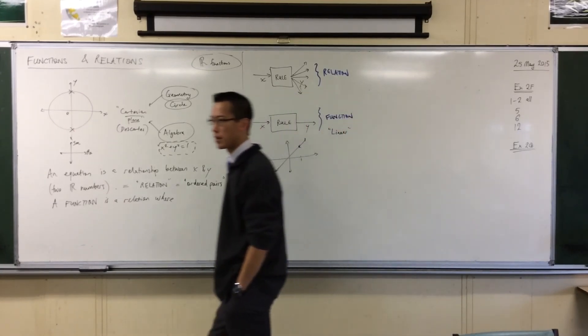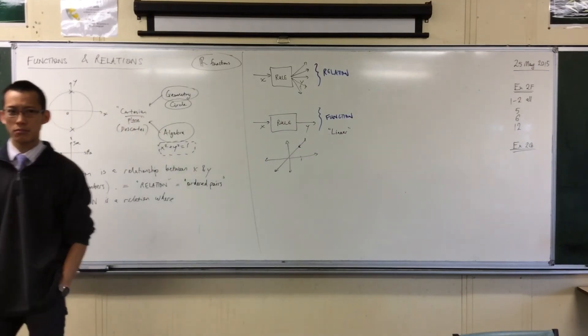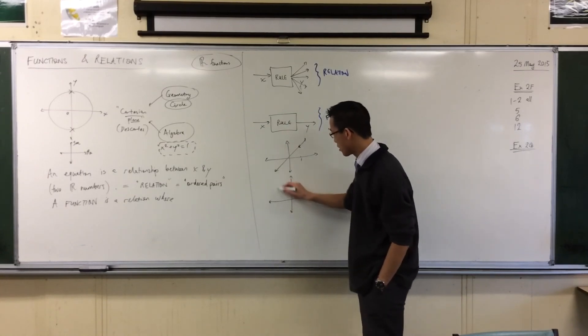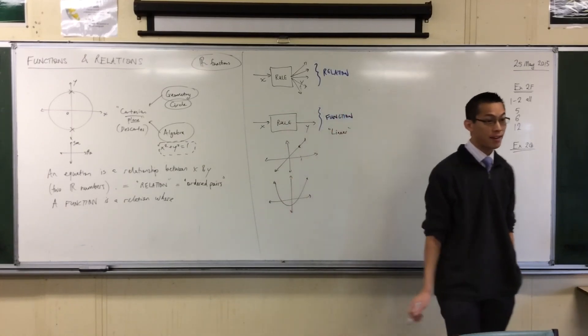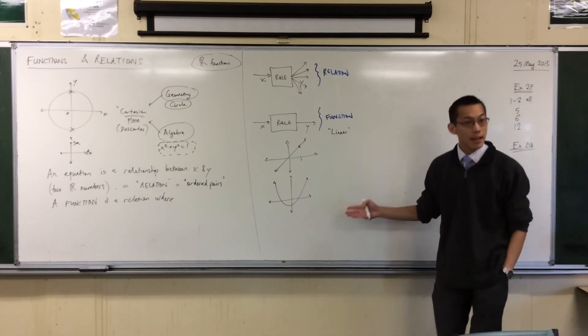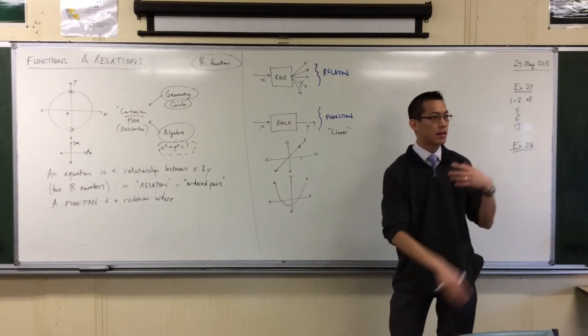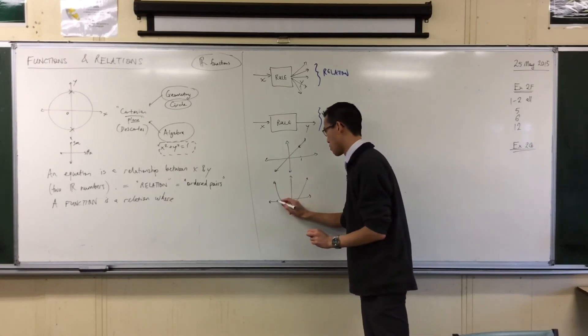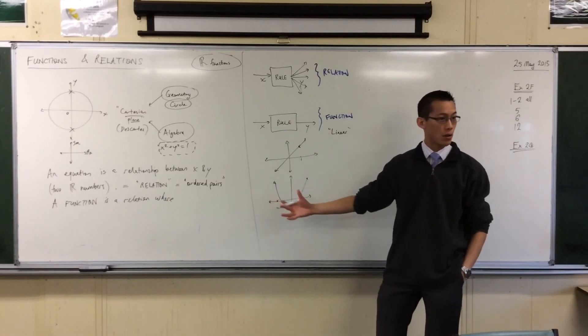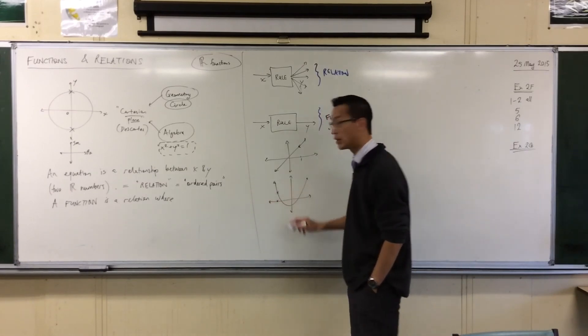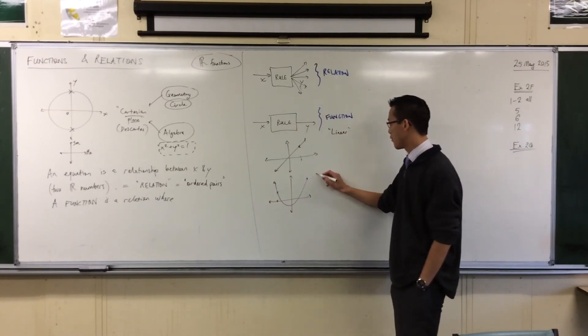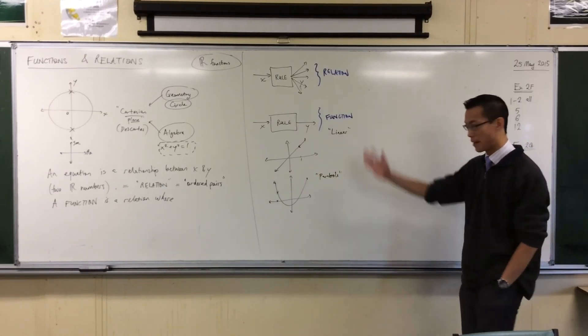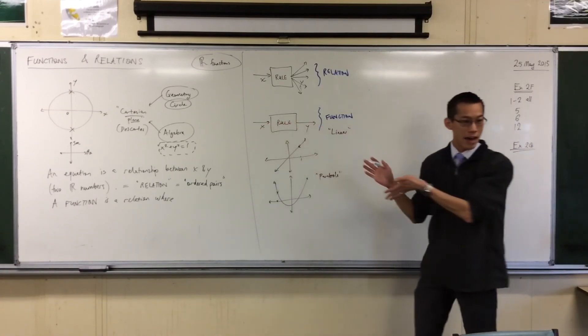What other kinds of graphs have we been thinking about in recent times? Parabolas, fantastic. Here's a parabola, this is a parabola. Again, if I pick some value of x, in fact, if I pick any value of x, like say, minus 3. How many y values correspond to that? And the answer is, only 1. So, linear functions, parabolic functions, they're also going to be just 1 value in, 1 value out.